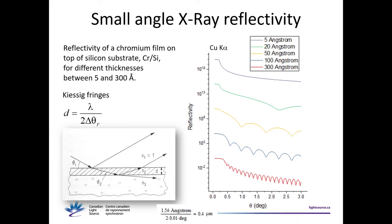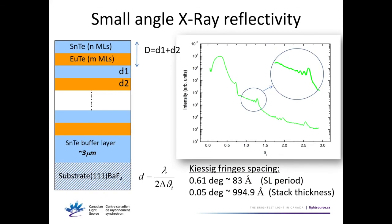Another thing to note: reflectivity measurements have a large dynamic range — they start very intense and go down several orders of magnitude. So if you want to measure to relatively high theta, you need a detector with high dynamic range and lots of flux to start with. You usually start with filters in different regions. Here's an example of reflectivity of a superlattice, where you have several periodicities: the small frequency is related to the period of the superlattice, and the high frequency oscillations relate to the whole superlattice stack thickness.